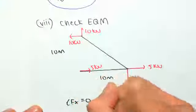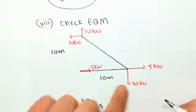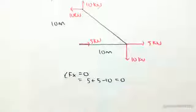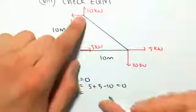So sum of forces in the x, we need that to equal zero. Sum of forces is 5 plus 5 minus 10, which equals zero, so that's good, that works out. Sum of forces in the y direction would equal 10 up, 10 down, so that's just zero.